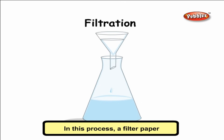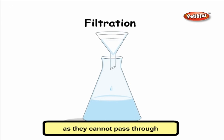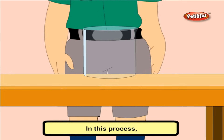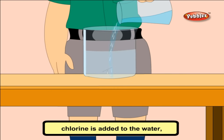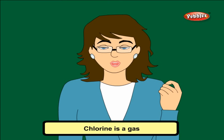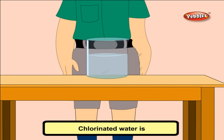Filtration: In this process, a filter paper is used to filter the water. We get clean water and the impurities remain on the filter paper as they cannot pass through its tiny pores. Chlorination: In this process, chlorine is added to the water, which kills the germs in it. Chlorine is a gas and also available as chlorine tablets. Chlorinated water is free of germs and pure to drink.